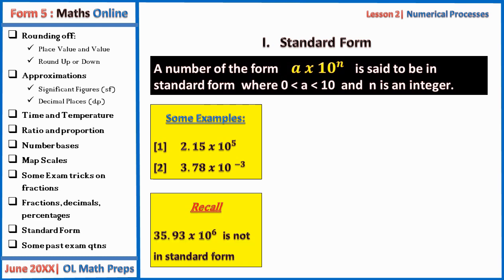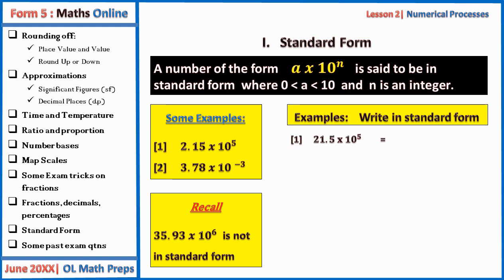Write the following in standard form: 21.5 × 10⁵. The decimal point must be after the 2, so moving it one place to the left requires multiplying by 10¹. This gives 2.15 × 10⁵ × 10¹ = 2.15 × 10⁶. Also, 601.3 × 10⁻³: moving the decimal two places to the left multiplies by 10². So 10² × 10⁻³ = 10⁻¹, giving 6.013 × 10⁻¹.